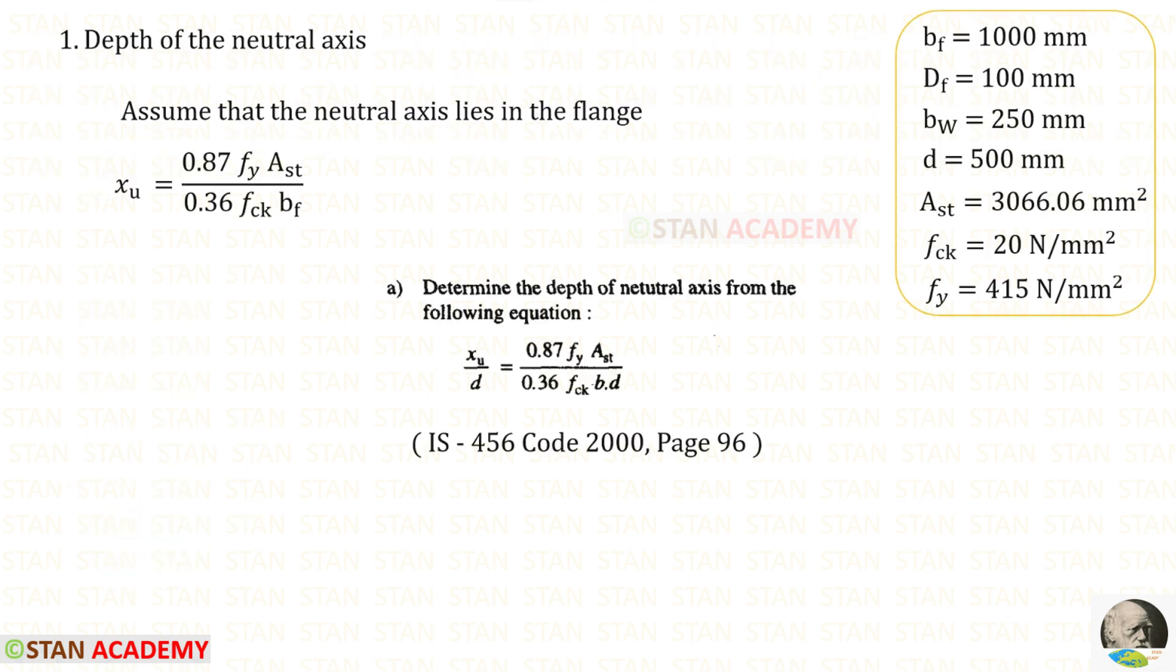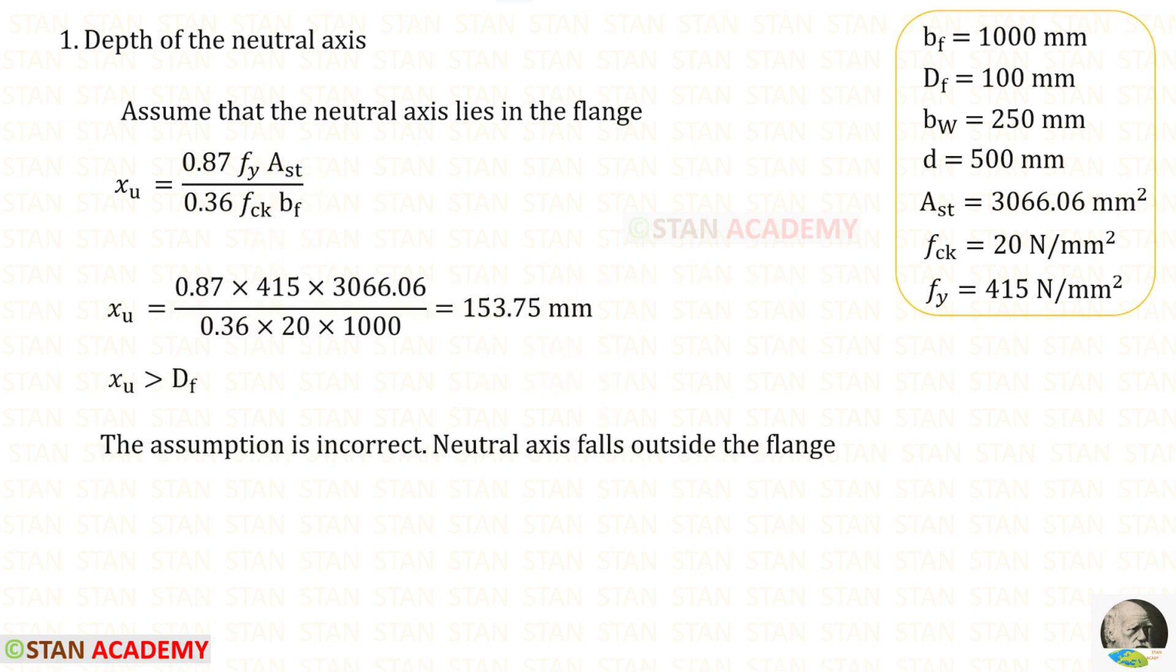First, let us assume that the neutral axis lies in the flange. From the IS-456 code book, page number 96, we can copy this. We can eliminate D on both sides. Instead of B, we have to apply BF. For XU, we will get 153.75 millimeters.